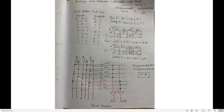Let us start with the first question: how to design it using PLA. Full adder means it adds three bits — consider them as A, B, and C — and you get outputs sum and carry. Since there are three inputs, there are eight combinations: two to the power of three equals eight, meaning from 000 to 111. First fill the truth table. Write four zeros, four ones, then double zero double one pattern, and finally alternating zero one.